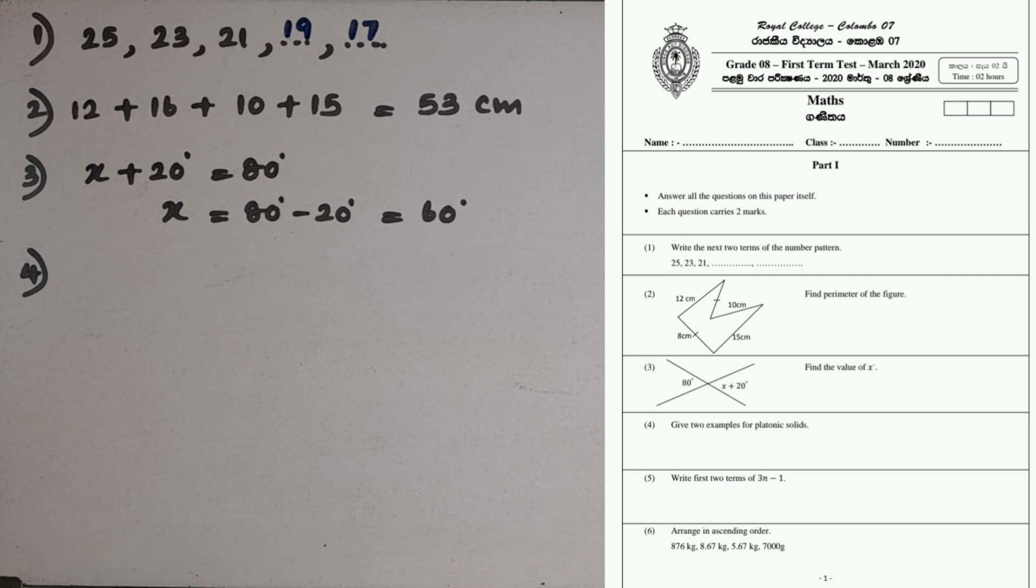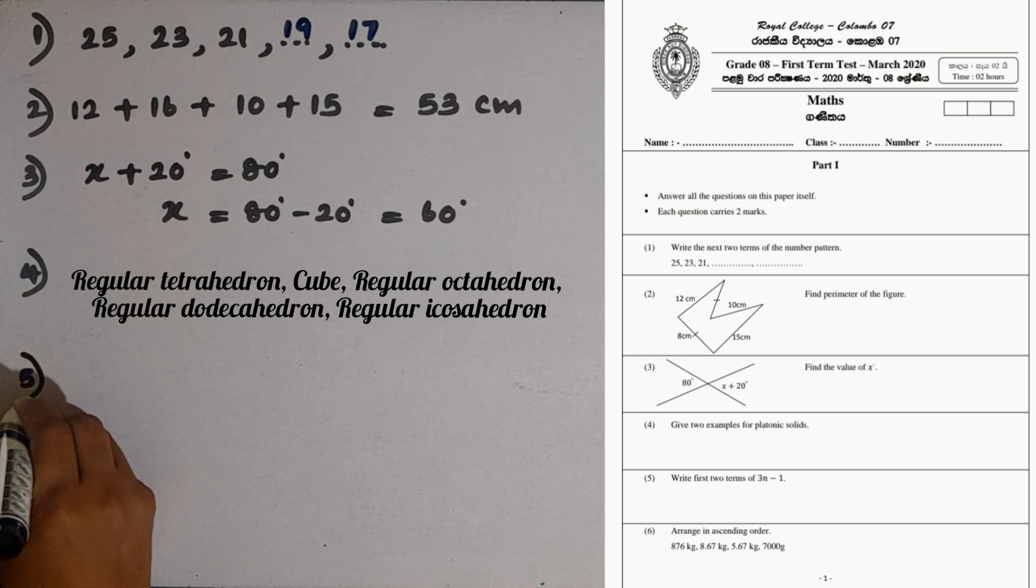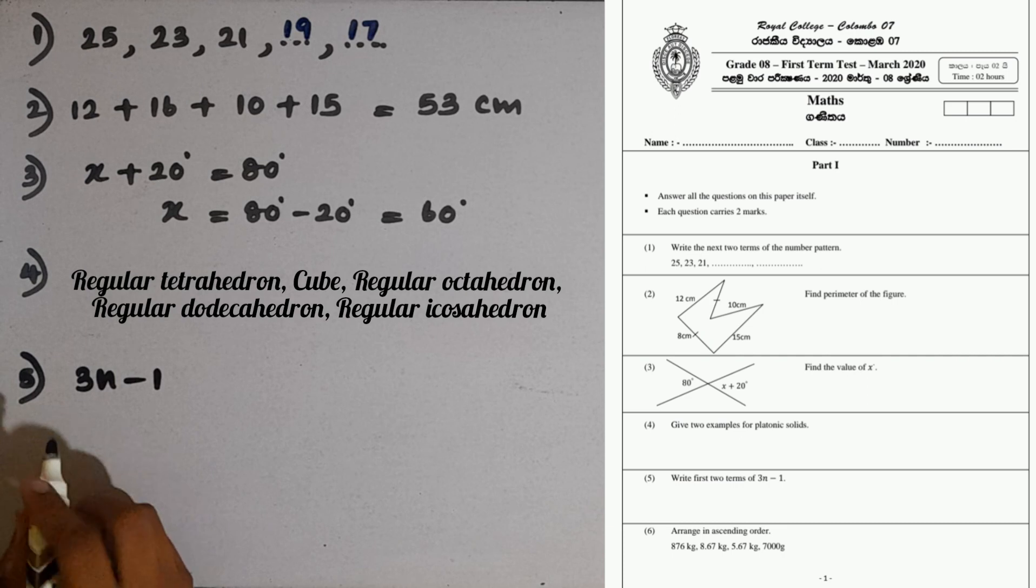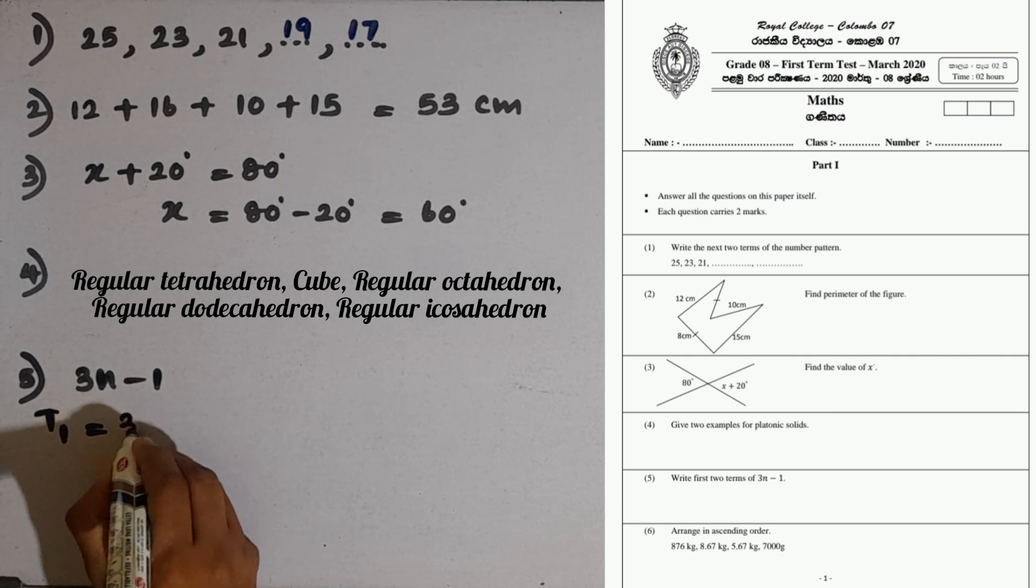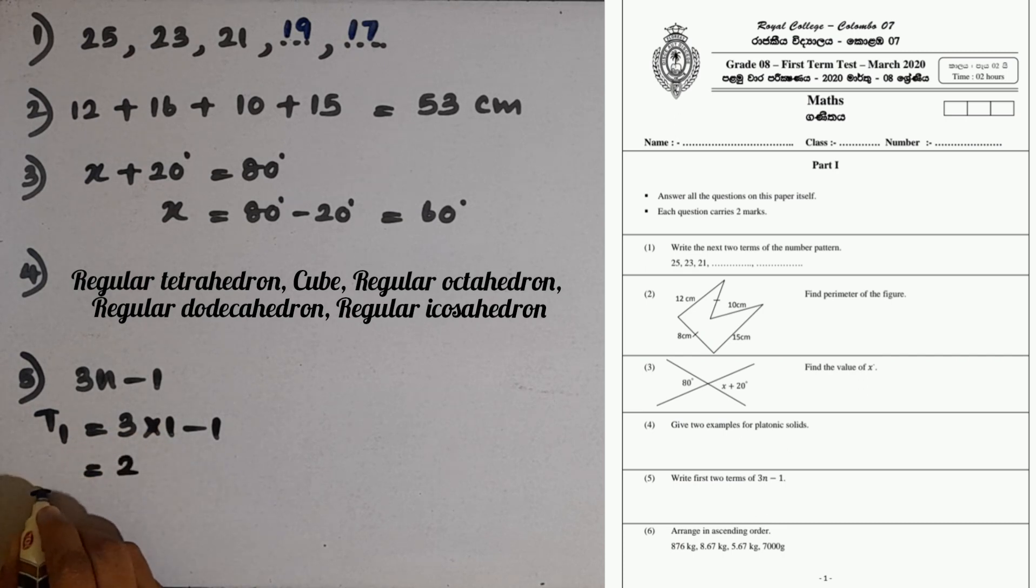Fourth question: give two examples for platonic solids. There are five platonic solids. We will recall them: regular tetrahedron, cube, regular octahedron, then regular dodecahedron and regular icosahedron. Question 5: write first two terms of 3n minus 1. To take the first term we will write it as t1. We have to substitute n equals 1 for n here, so 3 multiplied by 1 minus 1, 3 minus 1 is 2. Then t2 equal to 3 multiplied by 2 minus 1, 6 minus 1 is 5.